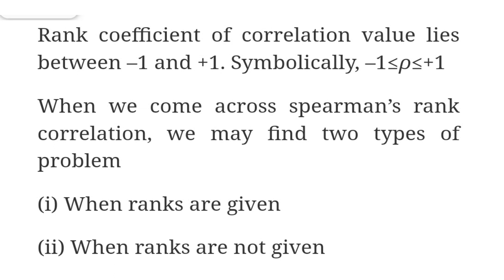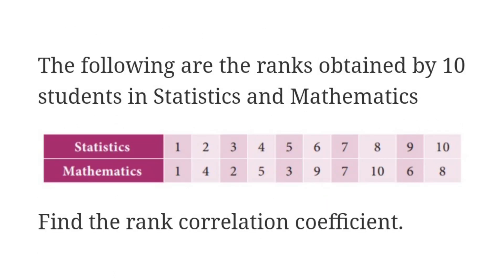In this video, we will work through an example where ranks are given directly. The following are the ranks obtained by students in statistics and mathematics. In statistics, the students scored ranks 1 through 10. In mathematics, the corresponding ranks are 1, 4, 2, 5, 3, 9, 7, 10, 6, and 8 respectively. We need to find the rank correlation coefficient.